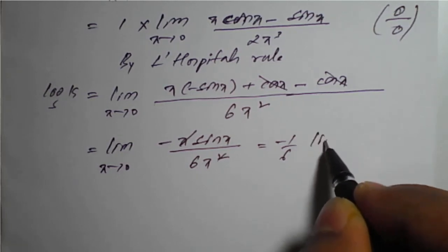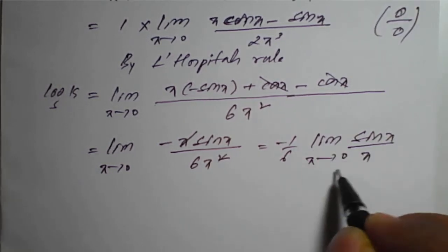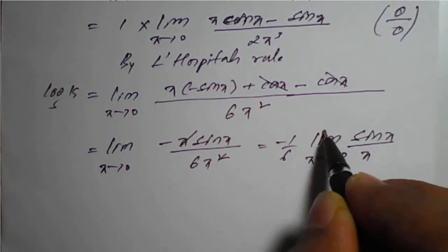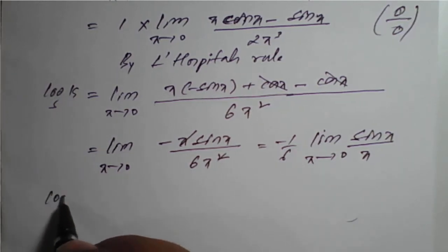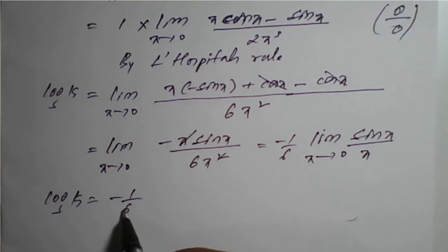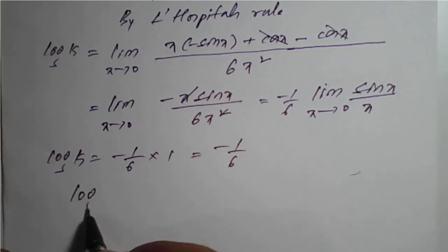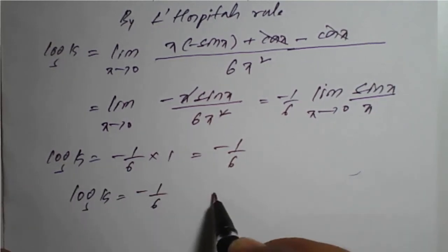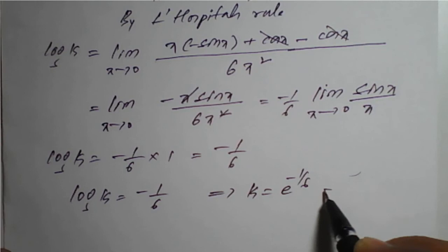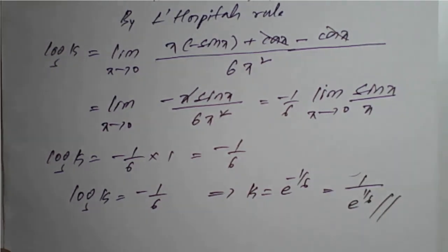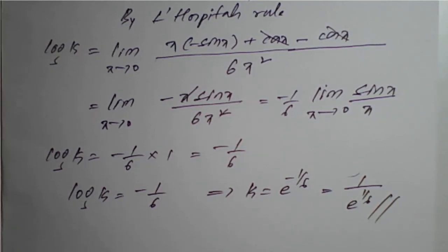This leaves minus x sin x divided by 6x square. On simplification, one x cancels, giving minus 1 upon 6 into limit of (sin x divided by x) as x tends to 0. By the standard identity, limit sin x upon x as x tends to 0 is 1. Therefore log k equals minus 1 by 6, which implies k equals e raised to minus 1 by 6, or equivalently 1 upon e raised to 1 by 6. This is the required solution, very important for examination.